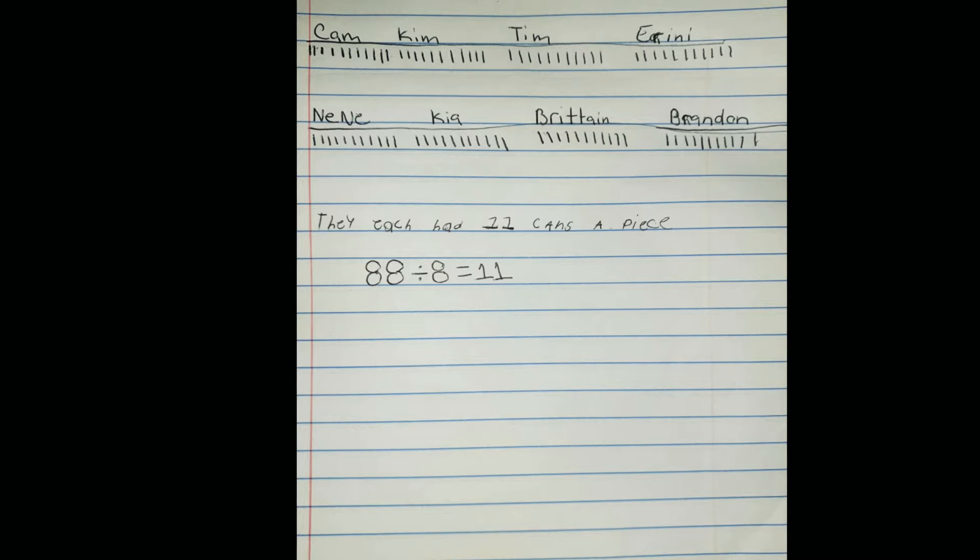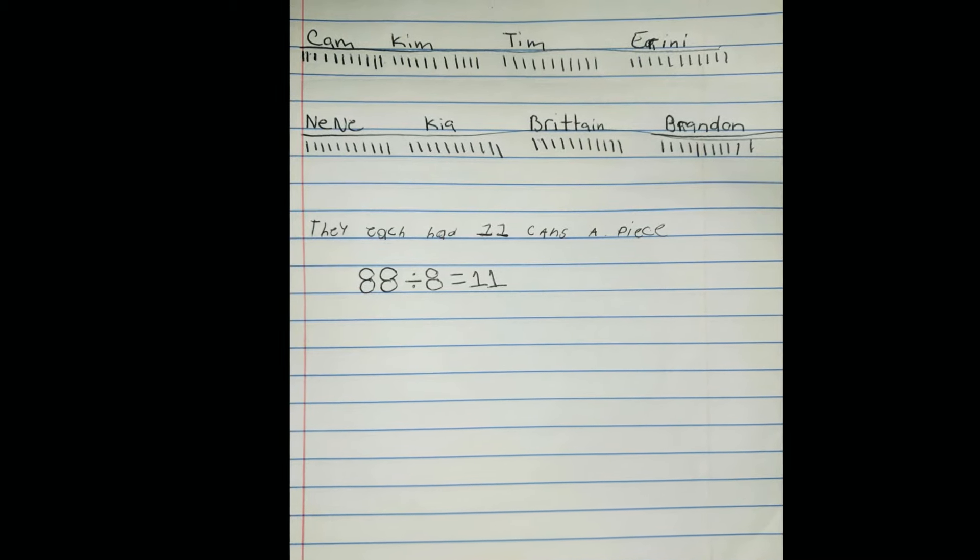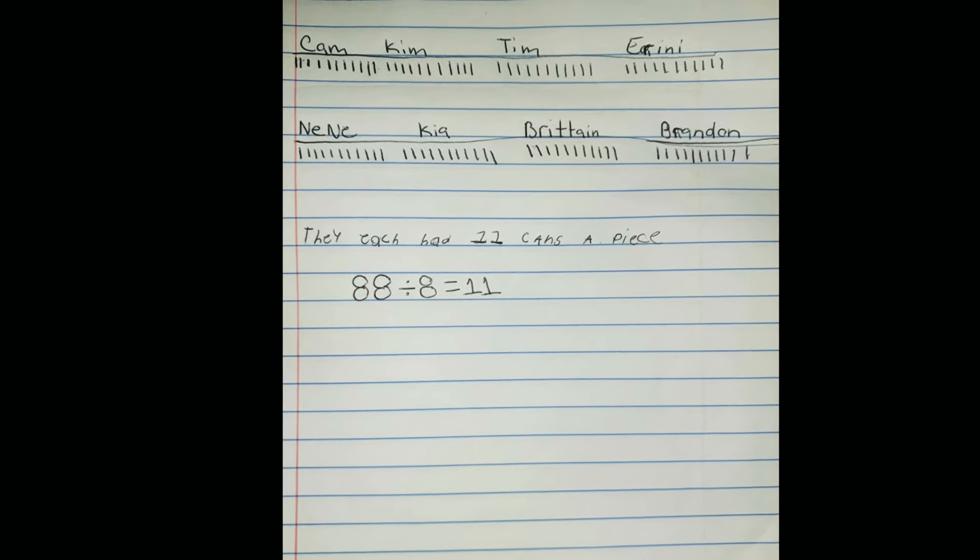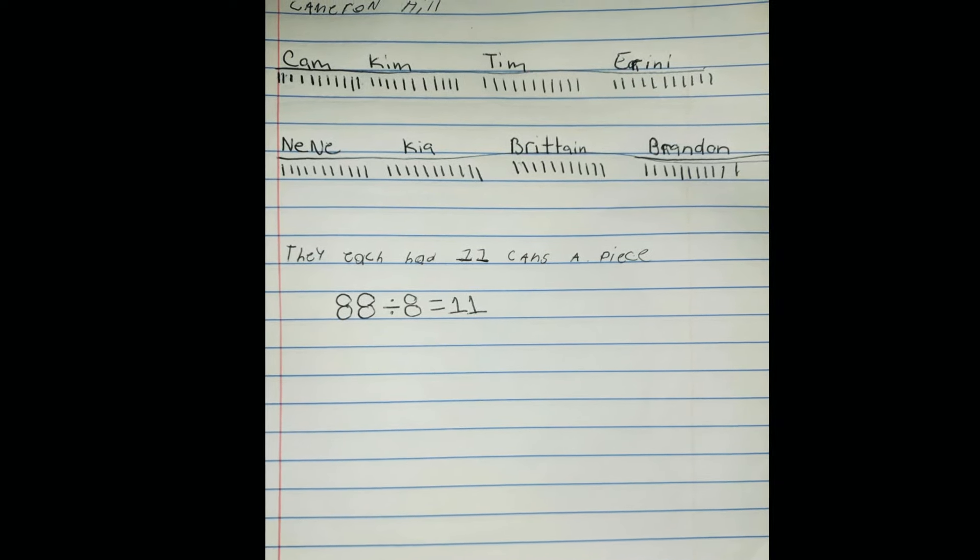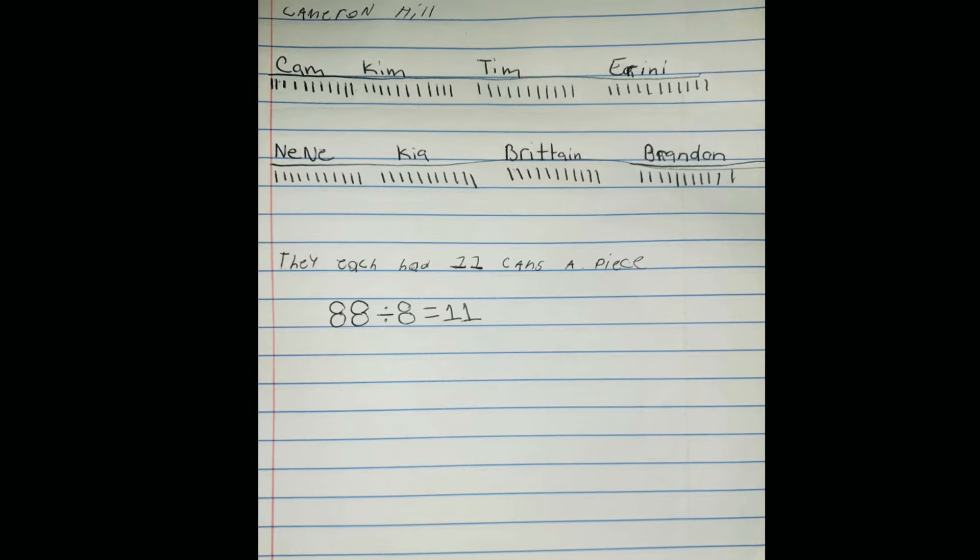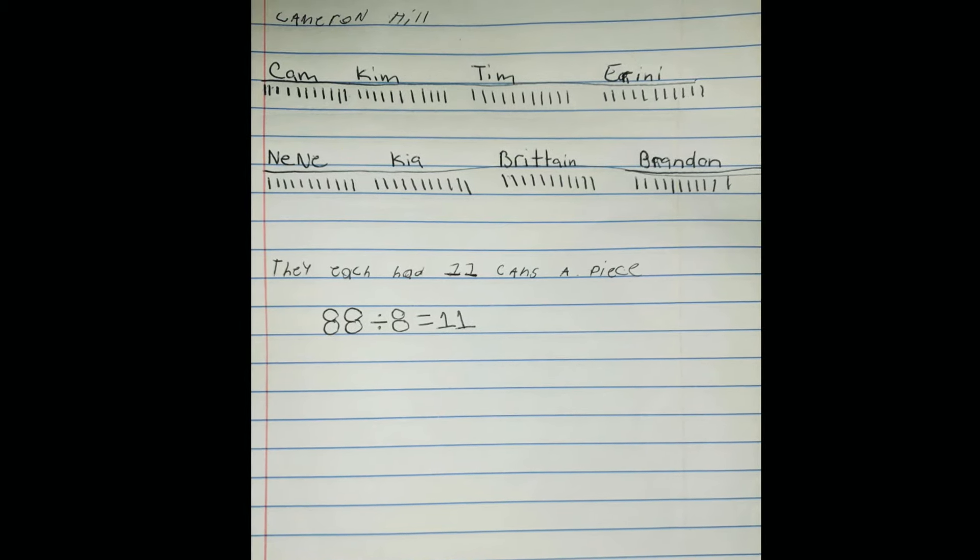Now, let's look at Cameron. Cameron gave eight of his friends names and he put 11 lines under each friend's name. He wrote that they each had 11 cans apiece and he wrote out a number sentence as well, stating that 88 divided by 8 equals 11.